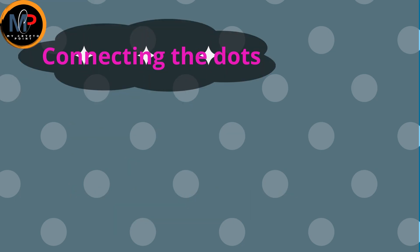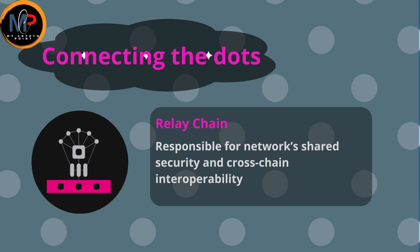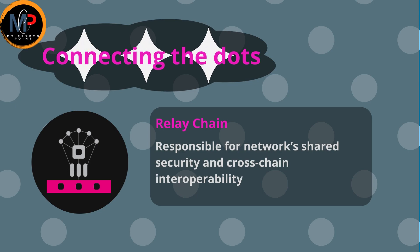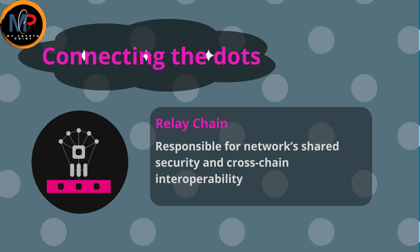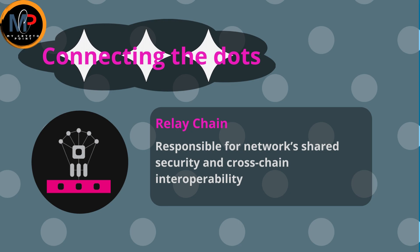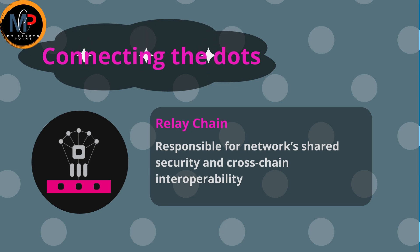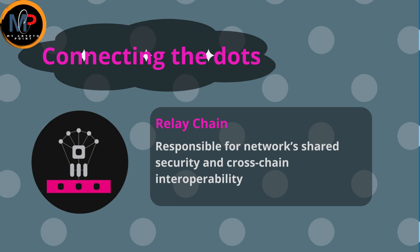To connect anything in Polkadot we need three main components. The first is the Polkadot Relay Chain — the component responsible for shared network security and cross-chain interoperability. All chains connected to Polkadot enjoy the base characteristics of the relay chain through their connection to it.